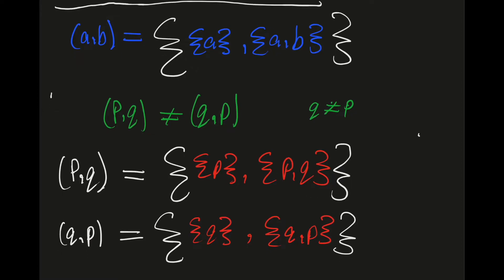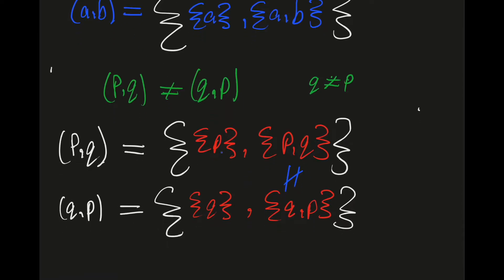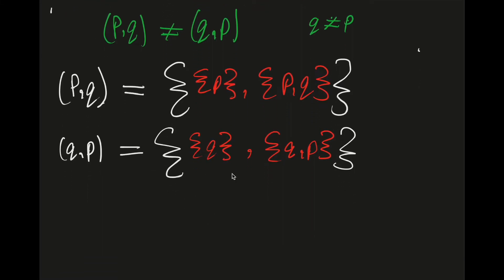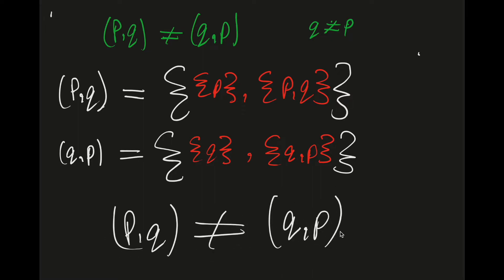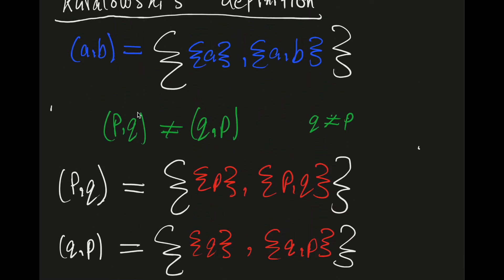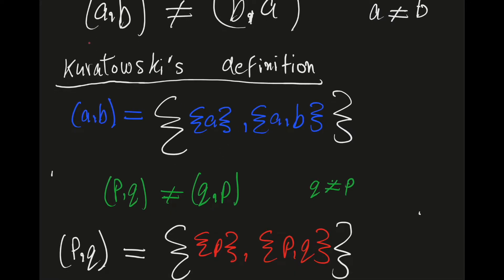Now we can see that these two sets are not the same. These two elements are equal to each other, but this element is not the same as this element, since q is not equal to p. And since these two sets aren't the same, we can deduce that (p, q) is not equal to (q, p). This is the result that we wanted, and since Kuratowski's definition gives us this result, we can confirm that this definition is correct. This is why we use Kuratowski's definition today.